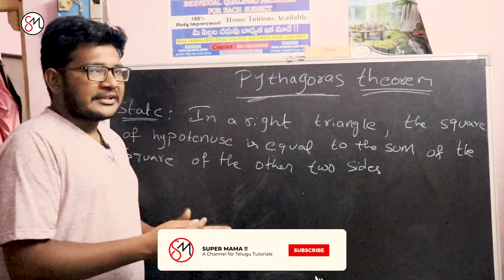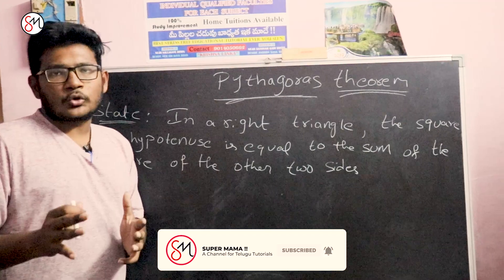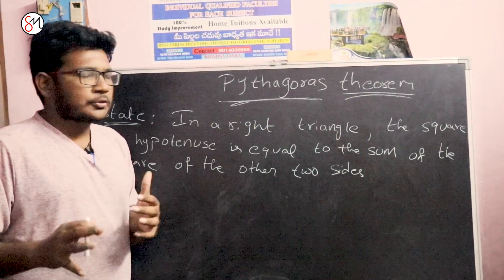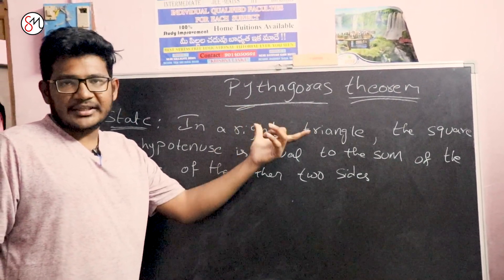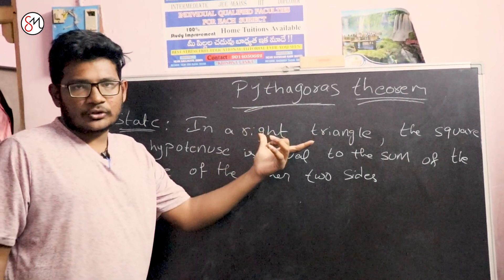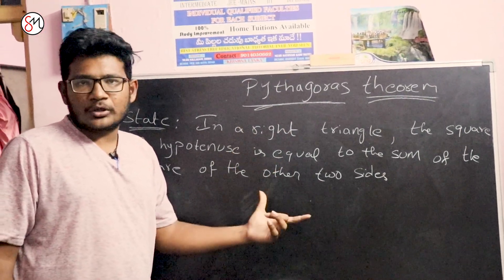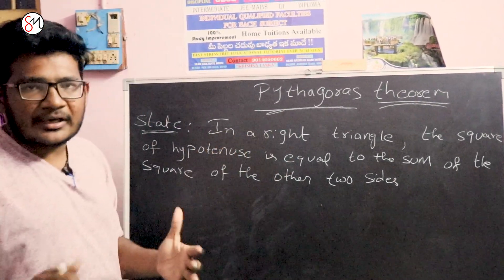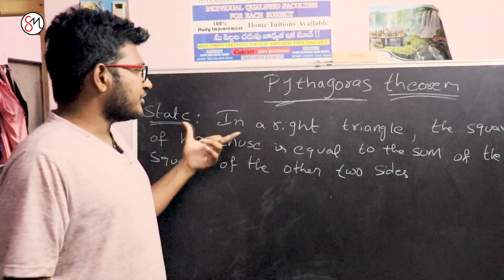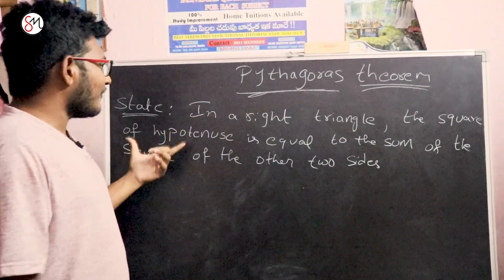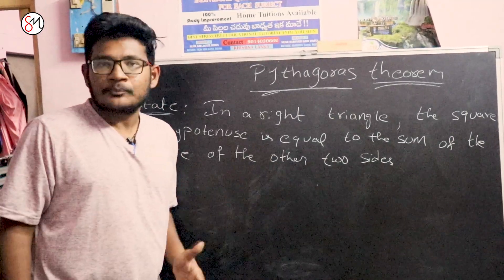Pythagoras theorem is the main statement. We will state and prove Pythagoras theorem. The statement is: in a right angle triangle, the square of the hypotenuse is equal to the sum of the squares of the other two sides.